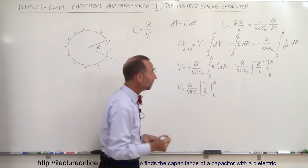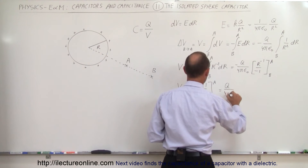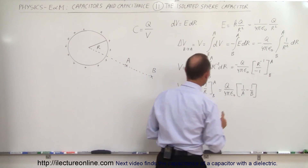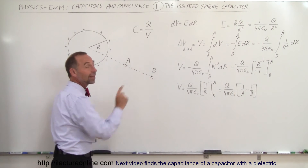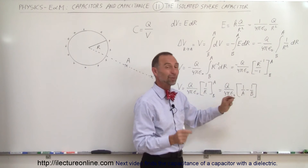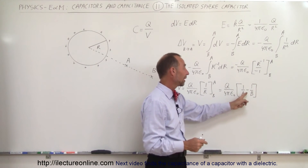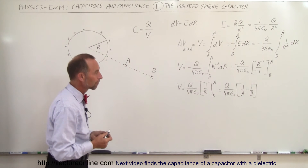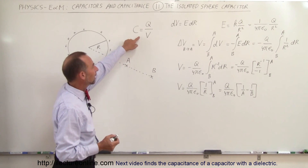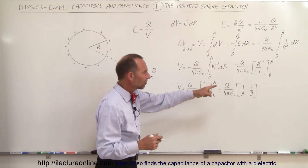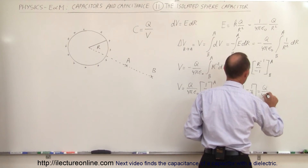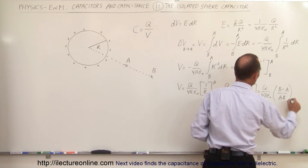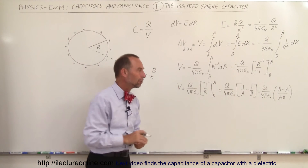Plugging in the limits gives us Q over 4πε₀ times (1/A minus 1/B). Notice that going from B to A the potential should increase — and indeed, since B is a bigger number, 1/B is smaller than 1/A, so 1/A minus 1/B is a positive quantity. We can also write this as Q over 4πε₀ times (B minus A) over (A times B).